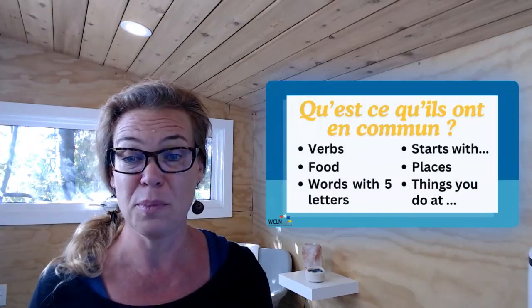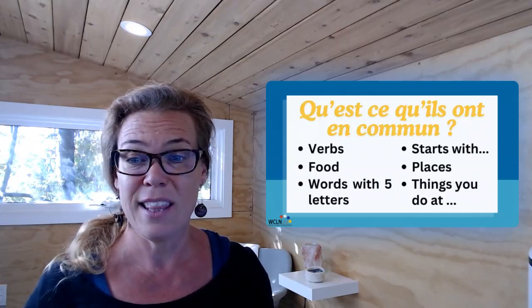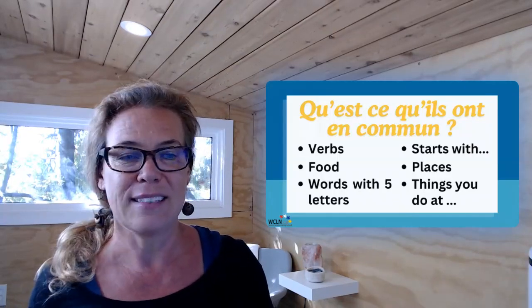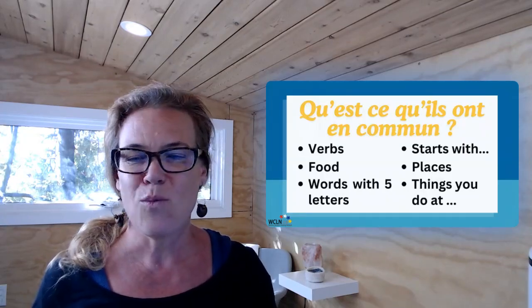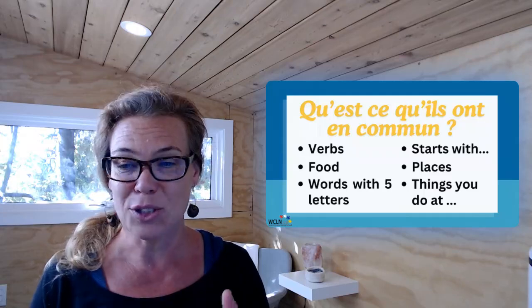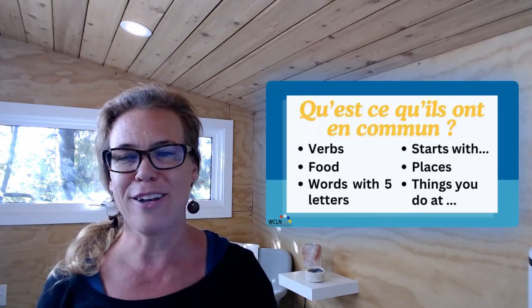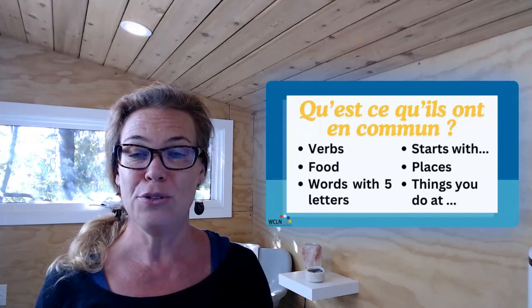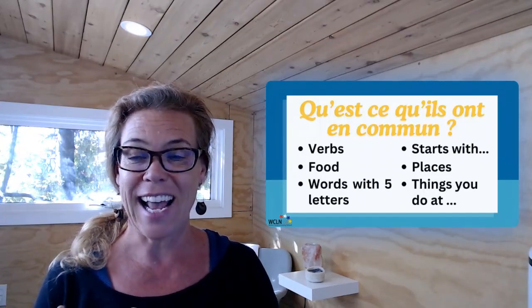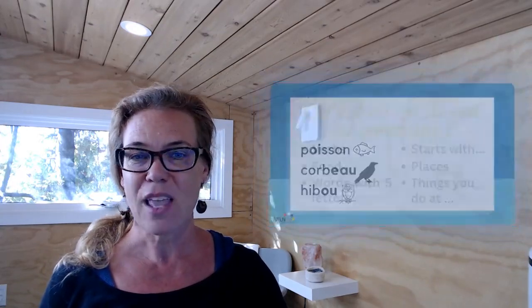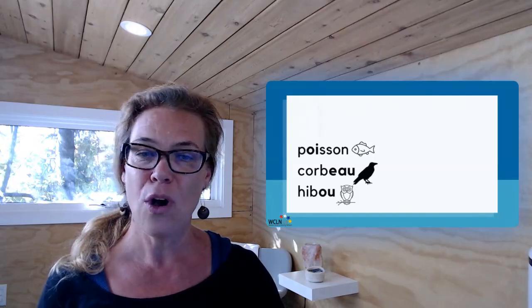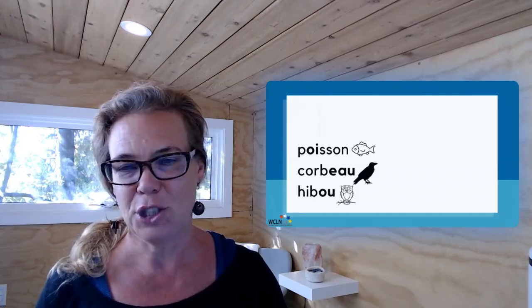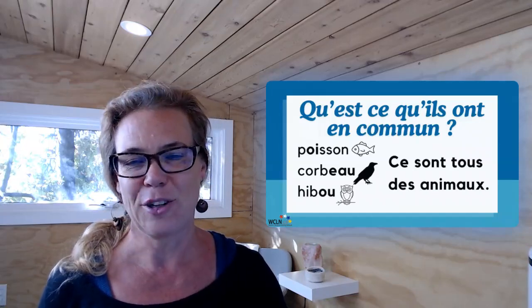What might you find in common between your three words? Maybe you're going to choose all verbs, types of food. You could even just say these words all have five letters, these words start with the letter M, they're places, they're things you do at school. What's important is that you're practicing the vowel sounds when they're in those combinations — not so much that you take a lot of time figuring out what they have in common. So when you go to share your words, give us the sound and then the word like I did. And then you can say what they have in common either in French or in English — ce sont tous des animaux, or these are all animals.